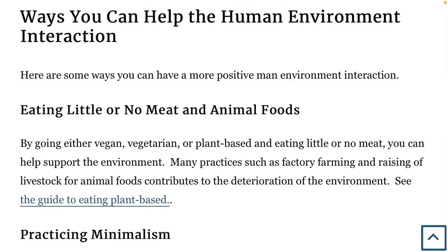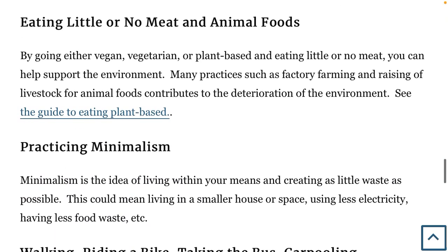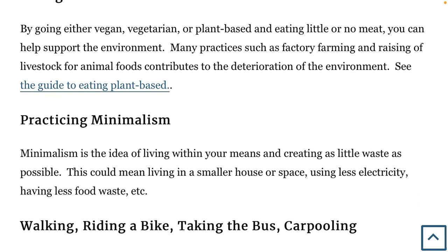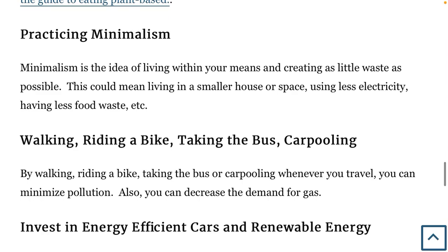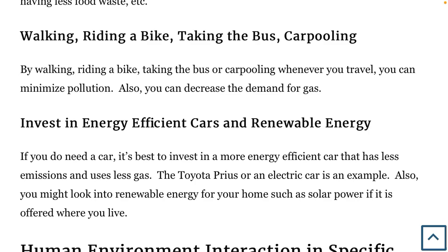Ways you can help with human environment interaction: one way is eating little or no meat and animal foods — being vegan, vegetarian, or eating a plant-based diet. Many practices like factory farming and raising livestock contribute to the deterioration of the environment. Practicing minimalism is another way — living within your means and creating as little waste as possible, such as living in a smaller space, using less electricity, and having less food waste. In America, waste per person is tremendous. Walking, riding a bike, taking the bus, or carpooling whenever you travel can minimize pollution and decrease the demand for gas.